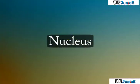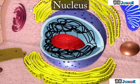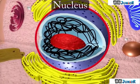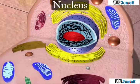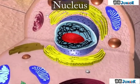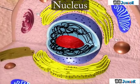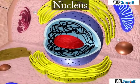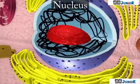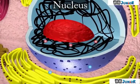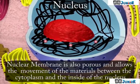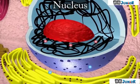Nucleus is an important component of the living cell, generally spherical and located in the center of the cell. The nucleus is separated from the cytoplasm by a membrane called the nuclear membrane. This membrane is also porous and allows the movement of materials between the cytoplasm and the inside of the nucleus.